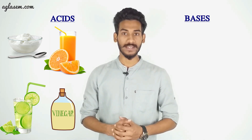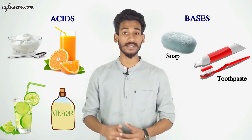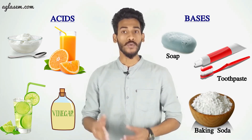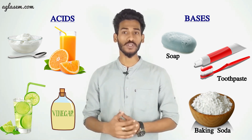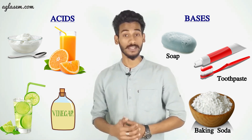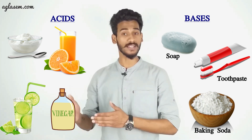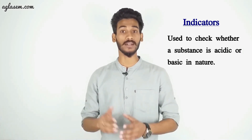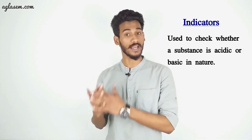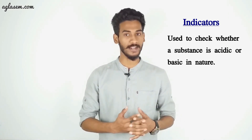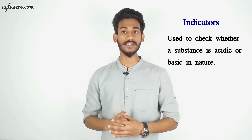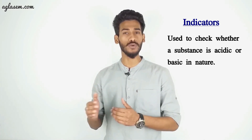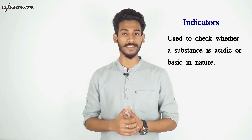Now talking about bases. Bases are substances like baking soda which are bitter in taste and feel soapy on touching. Substances which are neither acidic nor basic are called neutral substances. Indicators are substances that are used to check whether a substance is acidic or basic in nature. Indicators change their color when added to a solution containing an acid or a basic substance.